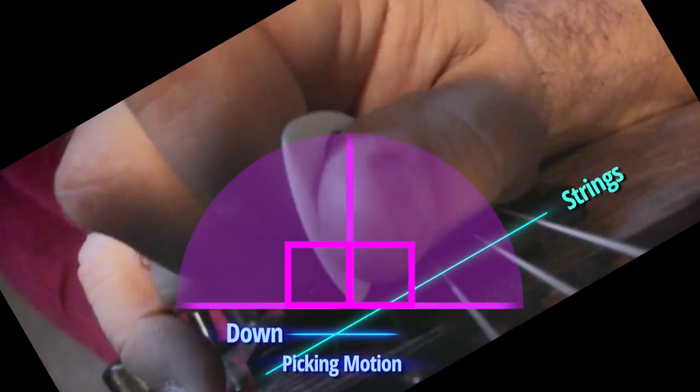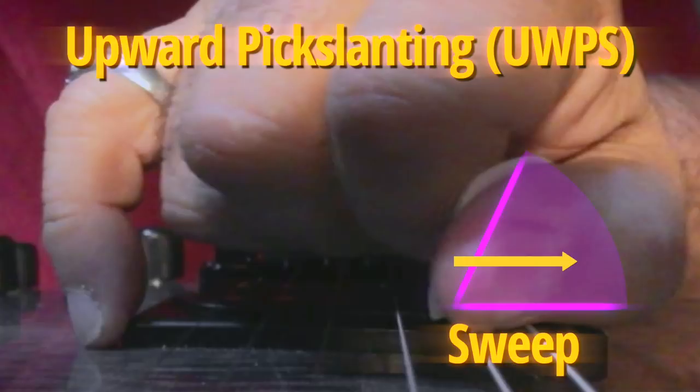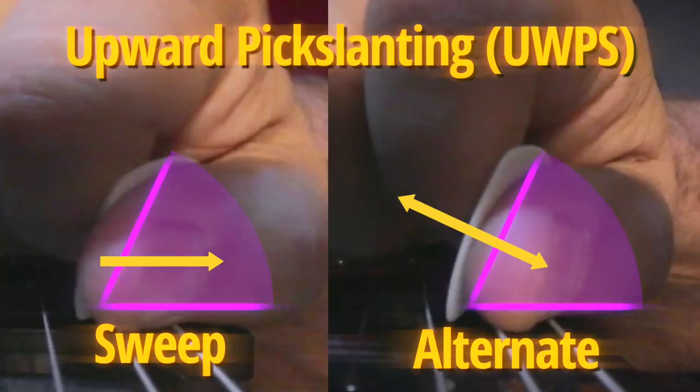And this right here, the fact that you can use the same pick slant to connect a sweeping motion with a diagonal alternate picking escape motion, is one of the great cosmic coincidences of guitar picking mechanics, and it is the core of what makes Frank's space-age technique work.